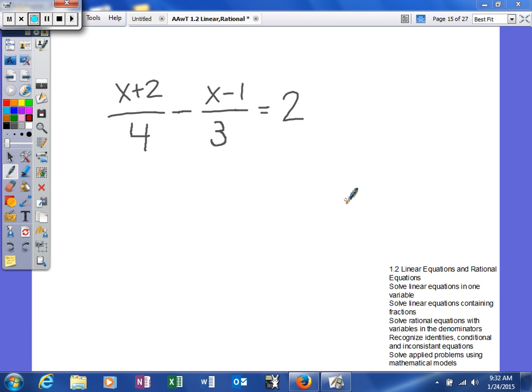Our next example looks like this. So we have x plus 2 over 4 minus x minus 1 over 3 is equal to 2. So as you can see, the game's changed a little bit.